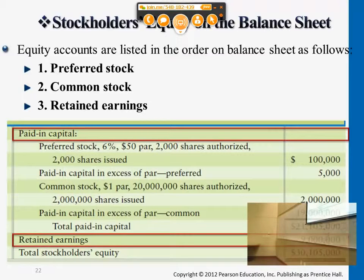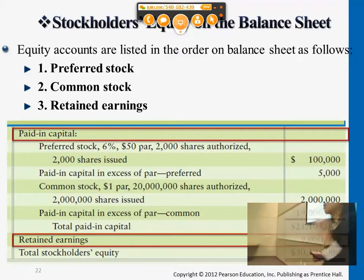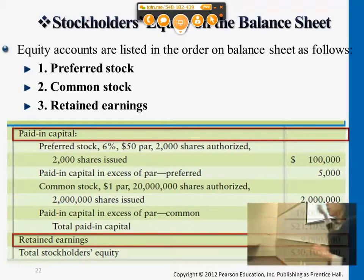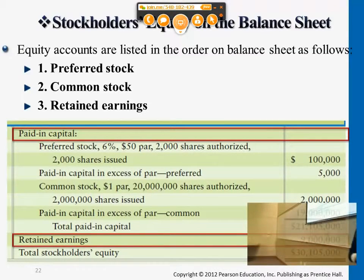In the sequence for listing this on the balance sheet: always, if there's preferred stock in the problem, we will list preferred stock first, then common stock, and then retained earnings. This is just the general sequence for how we list these under the balance sheet. We usually don't flip the order.